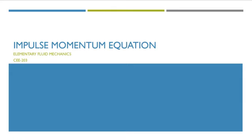In today's lecture, we will discuss the impulse momentum equation. The impulse momentum equation is one of the basic tools for the solution of flow problems. Other basic tools which we have discussed previously are the continuity and the Bernoulli equation. The application of impulse momentum equation leads to the solution of problems in fluid mechanics which cannot be solved by energy principles alone. Sometimes it is used in conjunction with the energy equation to obtain a complete solution of engineering problems.